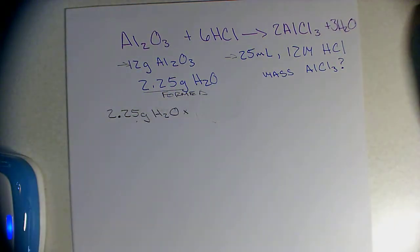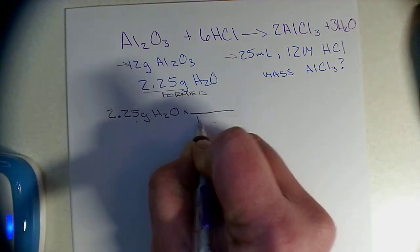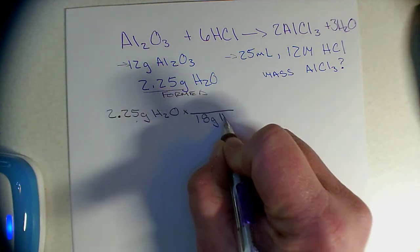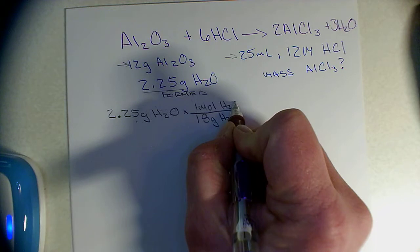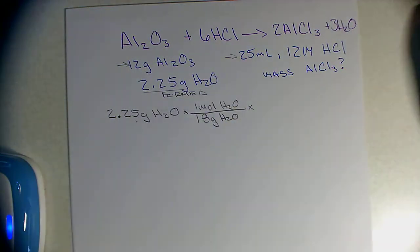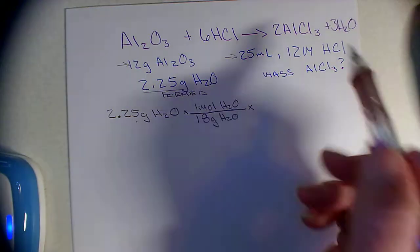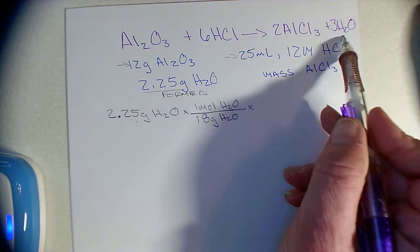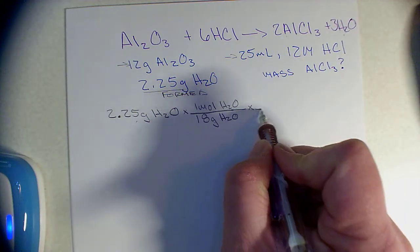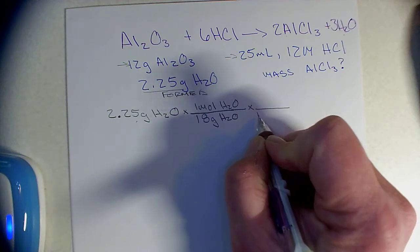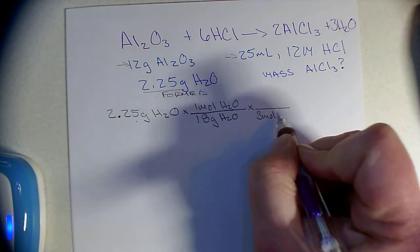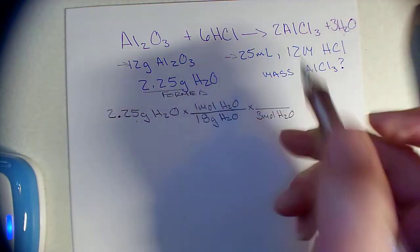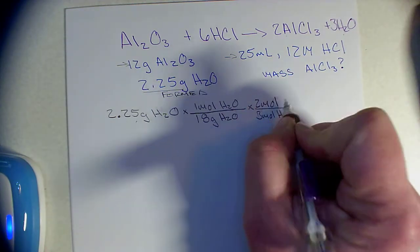First we've got to get water into moles — rounding for now, that's 18 grams of water per 1 mole of water. Now I need to use my stoichiometry to get that into moles of AlCl₃. I notice I have 2 moles of AlCl₃ for every 3 moles of H₂O, so my water goes on the bottom: 3 moles of H₂O to 2 moles of AlCl₃.